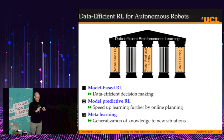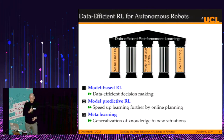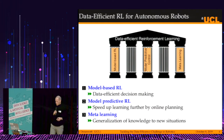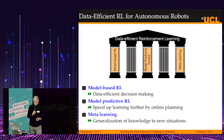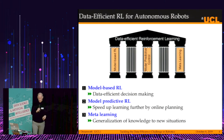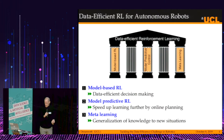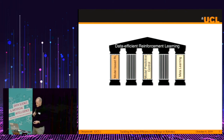In my talk I am going to go through three pillars of data-efficient reinforcement learning. First, model-based reinforcement learning for data-efficient decision-making. Then model-predictive reinforcement learning to speed up learning further by online planning. And the last pillar is meta-learning to generalize knowledge to new situations. Let's get started with model-based reinforcement learning.